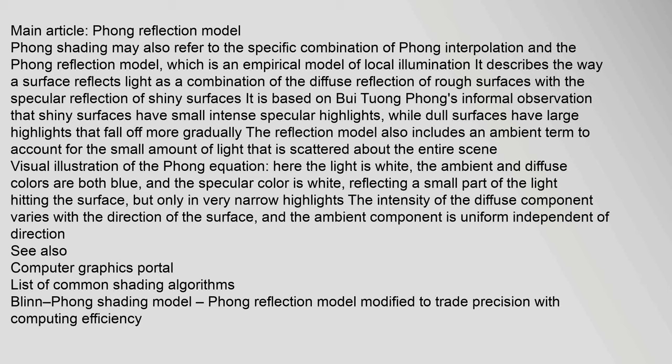Dull surfaces have large highlights that fall off more gradually. The reflection model also includes an ambient term to account for the small amount of light that is scattered about the entire scene. In a visual illustration of the Phong equation, the light is white, the ambient and diffuse colors are both blue, and the specular color is white, reflecting a small part of the light hitting the surface in very narrow highlights. The intensity of the diffuse component varies with the direction of the surface, and the ambient component is uniform, independent of direction.